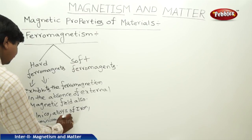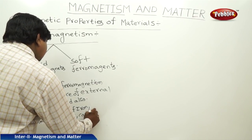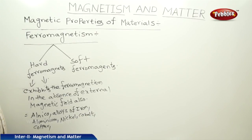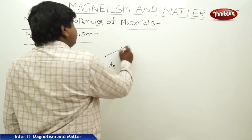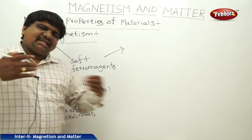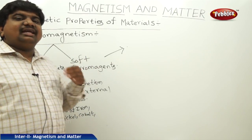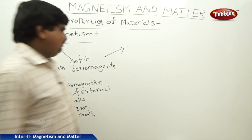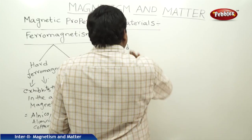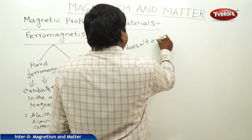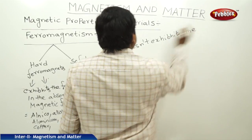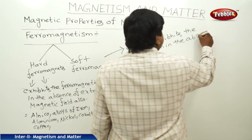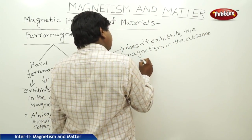aluminum, nickel, cobalt, and copper — these are examples of hard ferromagnets. Soft ferromagnets are exactly opposite to hard ferromagnets. If you remove the external magnetic field, soft ferromagnets lose their magnetism. In the absence of the external magnetic field, there is no chance to exhibit magnetic behavior — soft ferromagnets do not exhibit magnetism in the absence of an external magnetic field.